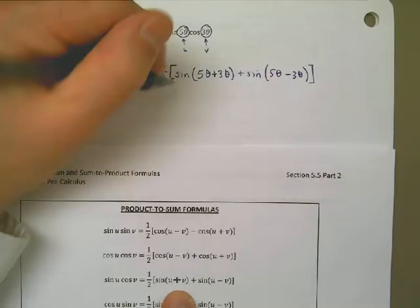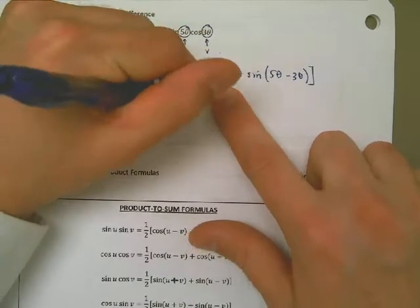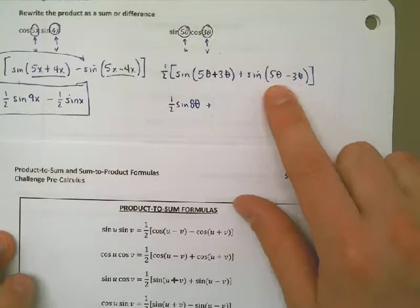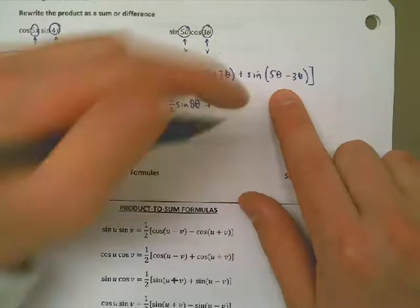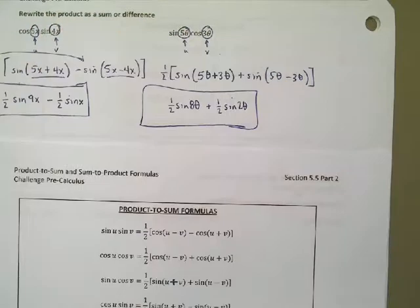So now that means that my answer, then, 5 theta and 3 theta add up to 8 theta. So I have one half sine of 8 theta plus, and then I have one half the sine of 2 theta. And that's how we can rewrite everything as a product as a sum or difference.